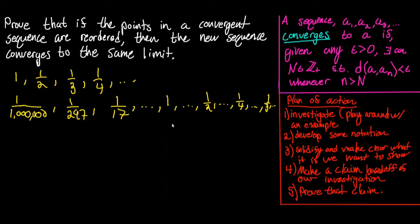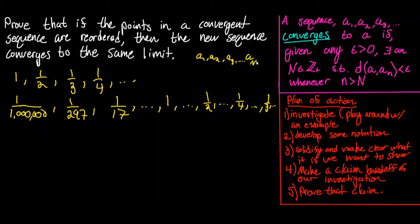To bring your attention to the pattern evident here — it might not be obvious at first, but after playing around with a bunch of reorderings — the pattern is best seen when we fall back on our definition of a convergent sequence. A sequence A1, A2, A3, and so on converges to A if, given any epsilon strictly greater than zero, there exists a positive integer N such that all terms after A sub N are a distance from A less than epsilon.